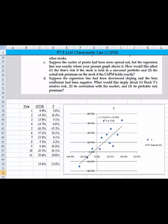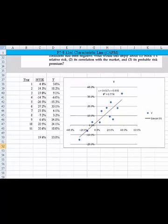Now, on part C, it says, suppose the scatter of points had been more spread out, but the regression line was exactly where your present graph shows it. How would this affect, one, the firm's risk of the stock held in a one-asset portfolio, and two, the actual risk premium on the stock if the CAPM holds exactly? Well, the thing to point out in part C is that the total risk would be greater, right? I mean, if these points are farther away from this line, then we've got more risk of returns of that stock relative to the market as a whole. Let me slide up a little bit and drop that formula in that we've seen before.